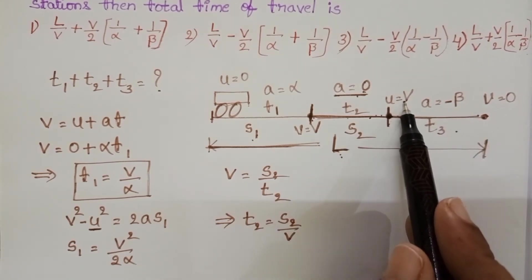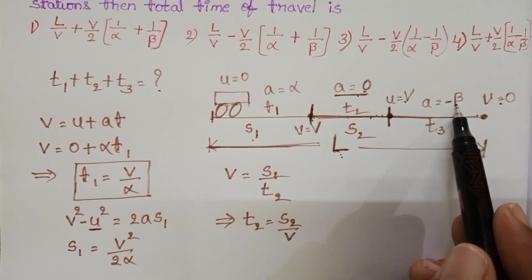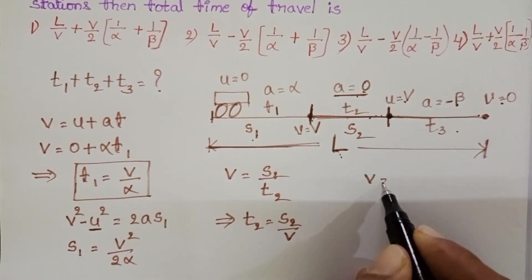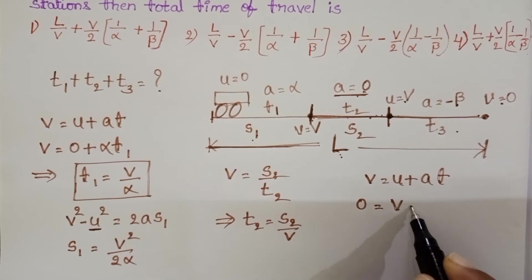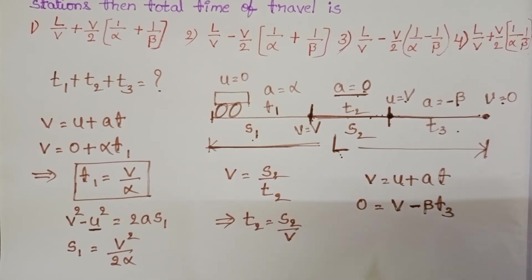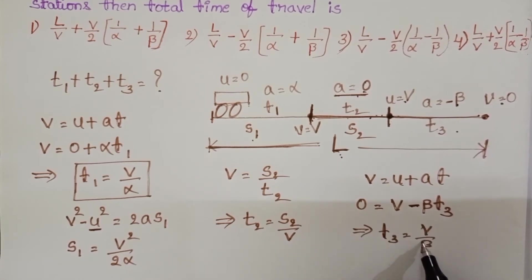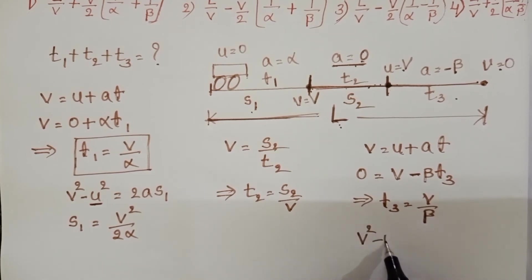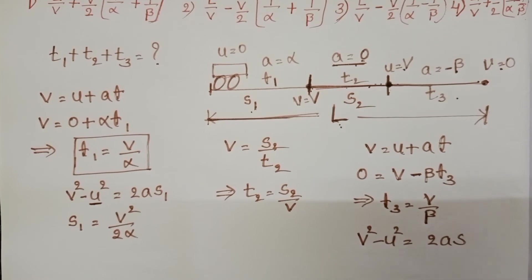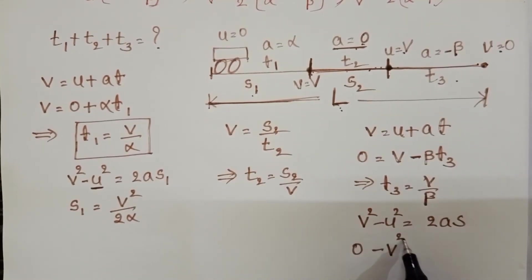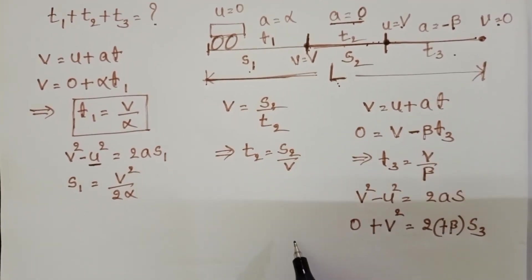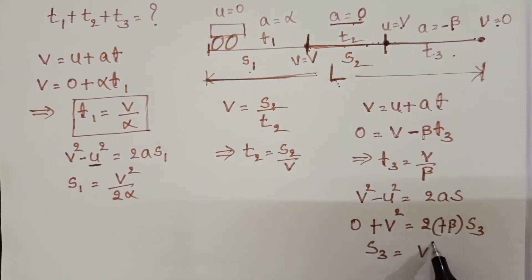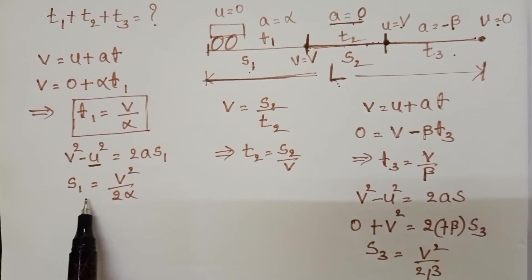In the third part, initial velocity is v, final velocity is 0, and acceleration is minus beta. Using v equals u plus at: final velocity 0, initial velocity v, acceleration minus beta, time is T3. From this, T3 equals v by beta. For distance S3, using v² minus u² equals 2as: final velocity 0, initial velocity v, acceleration minus beta. The negatives cancel, giving S3 equals v² by 2beta.